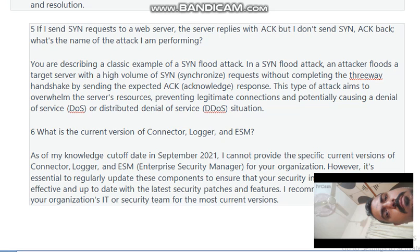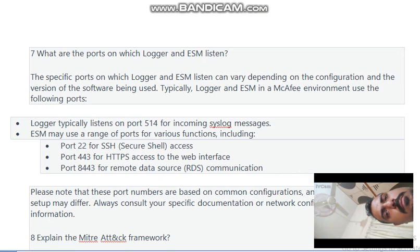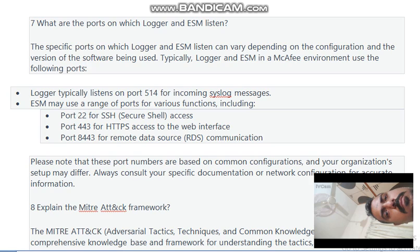What are the ports on which Logger and DSM listen? The specific ports on which Logger and DSM listen can vary depending on the configuration and version of the software. Typically in a McAfee ESM environment: Logger listens on port 514 for incoming syslog messages, and ESM uses a range of ports including port 222 for SSH (Secure Shell) access, port 443 for HTTPS, port 8443 for RDS (Remote Data Source) communication. Please note these port numbers are based on common configuration and your organization's setup may differ.